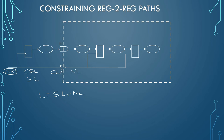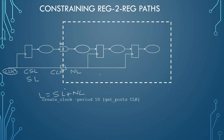Source latency models the delay from the actual clock origin to the clock port of your design. Using the Synopsys tool, we define this latency with: create_clock -period 10 [get_ports CLK]. The create_clock command creates the clock, and -period means one cycle will be 10 nanoseconds. So it will create a clock with this period at port CLK, which is the starting point of the clock inside your design.